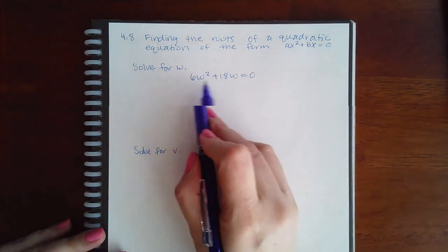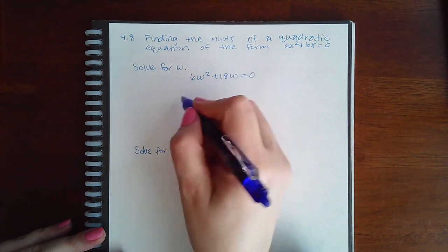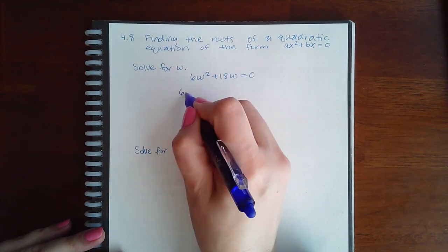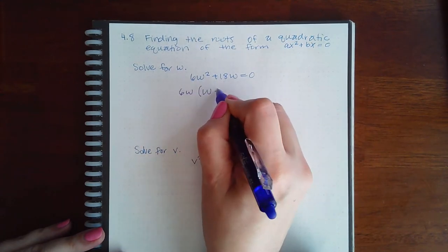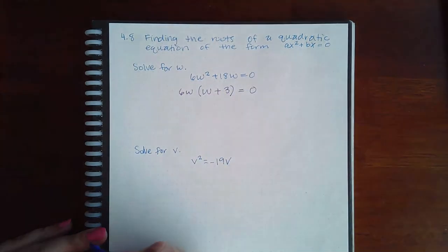The first thing you would do is try to identify a GCF. I notice that both of these can be divided by 6 and a w. When I do that, I'm left with w plus 3. To keep it an equation, I tagged on the equal zero as it was in the line before.